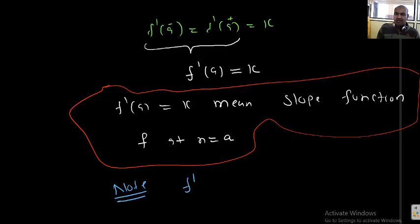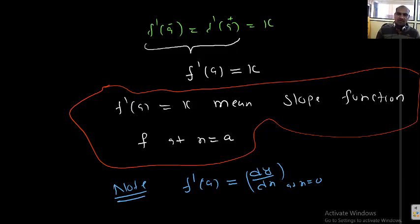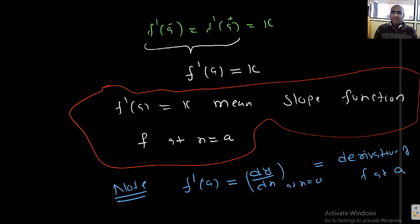F dash of a is sometimes written as dy by dx at x equal to a, or as the derivative of f at a. All of these give the same meaning. F dash of a means the slope of the curve at a, which is the same as dy by dx at x equal to a.